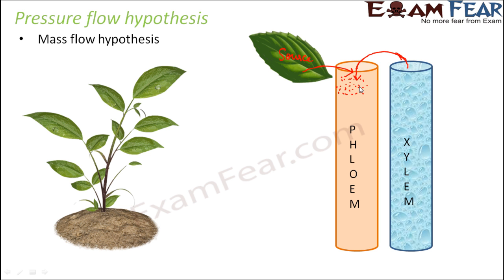Water starts to enter the phloem, so now you have sugar plus water — a sugar solution. When so much water enters into this area, pressure is created. Just as more and more water entering a container exerts pressure on its walls, a high pressure area is created in this region of the phloem.